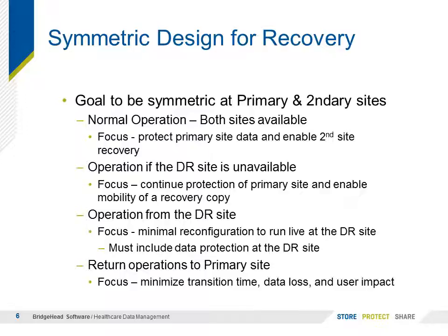For normal operation, the focus is to protect the primary site data and enable data recovery or failover to the secondary site. Key questions are how the data is backed up and whether the secondary site is integral to the backup. If the DR site is unavailable, the focus is how to continue protection of the primary site and enable recovery to restore the secondary site. But if the secondary site is integral to backup of the primary site, how will backup be performed prior to restoration being achieved?